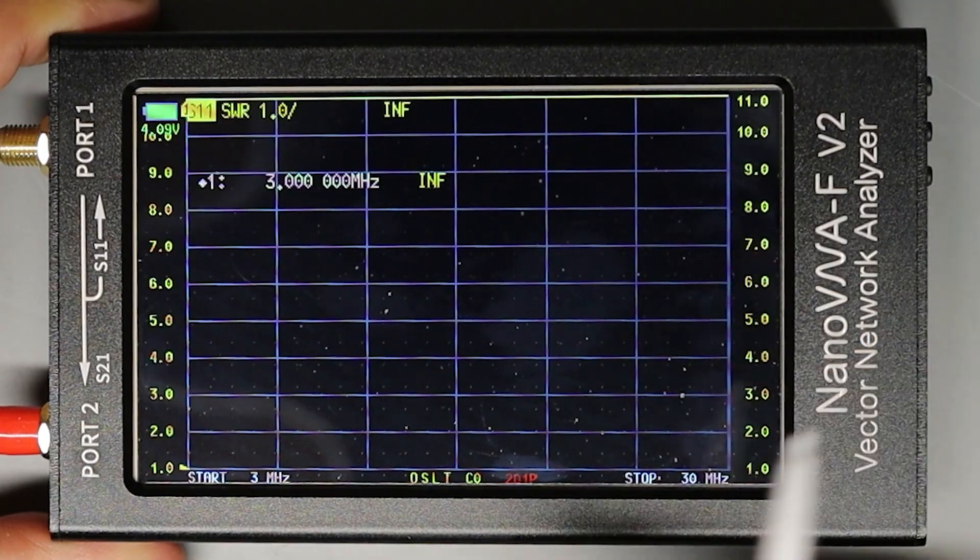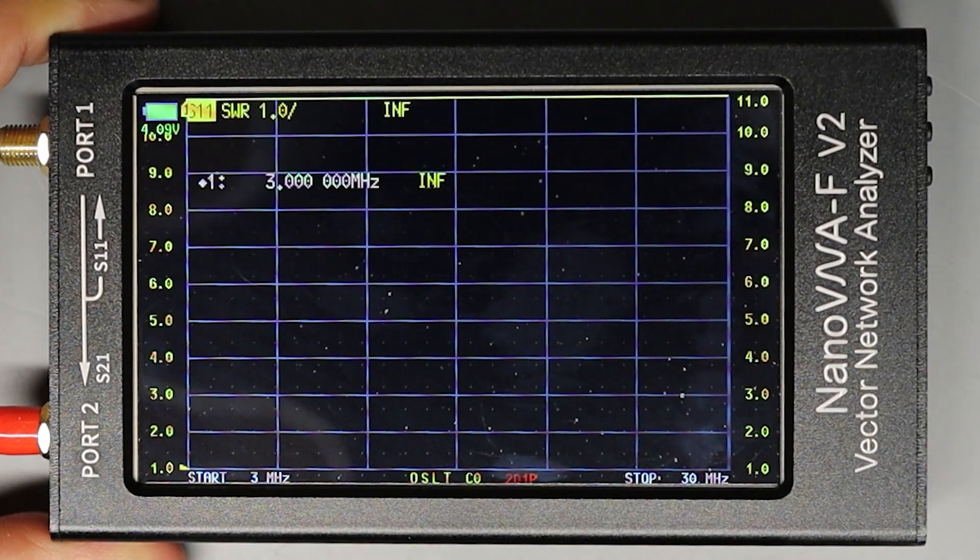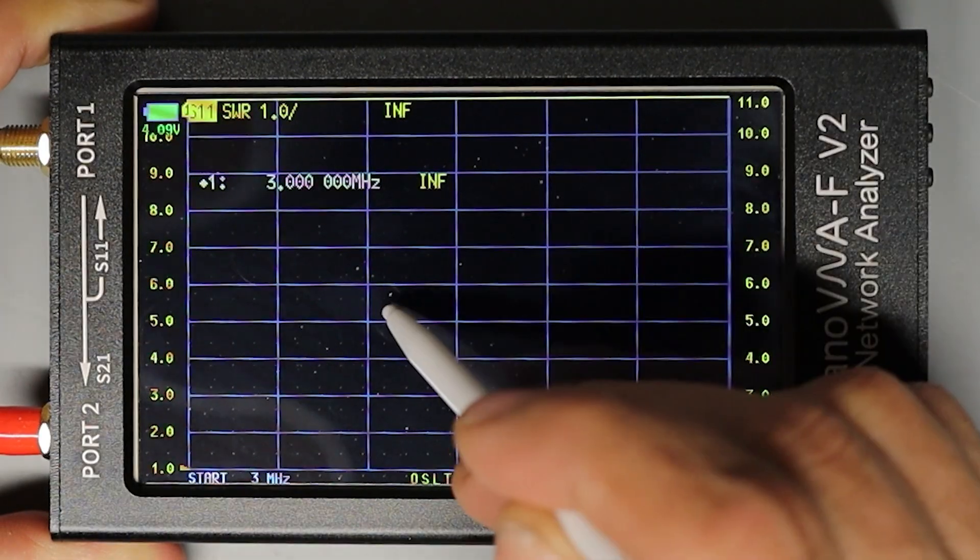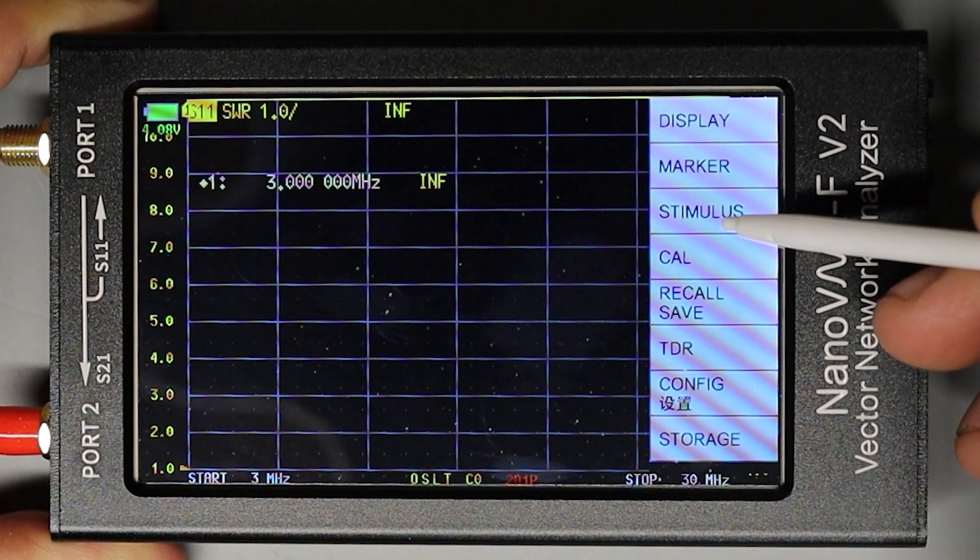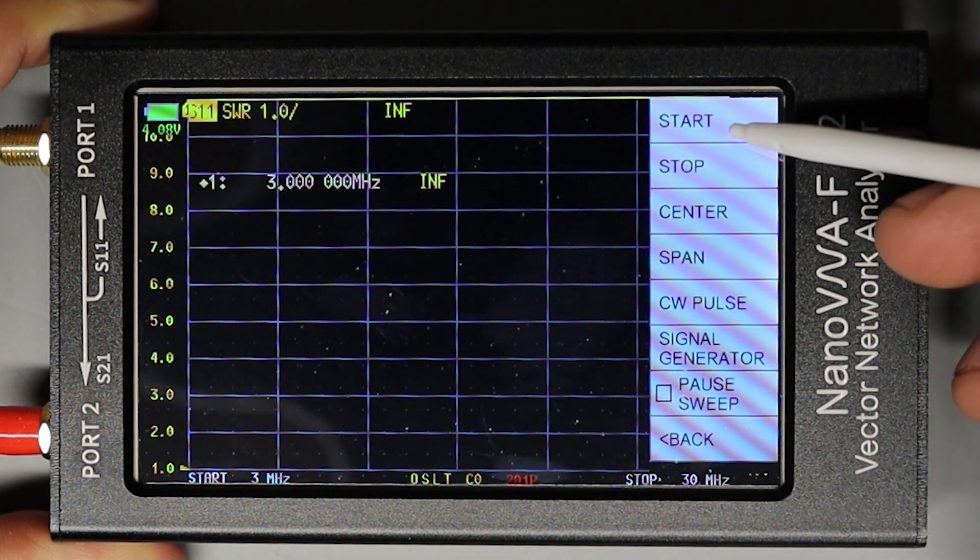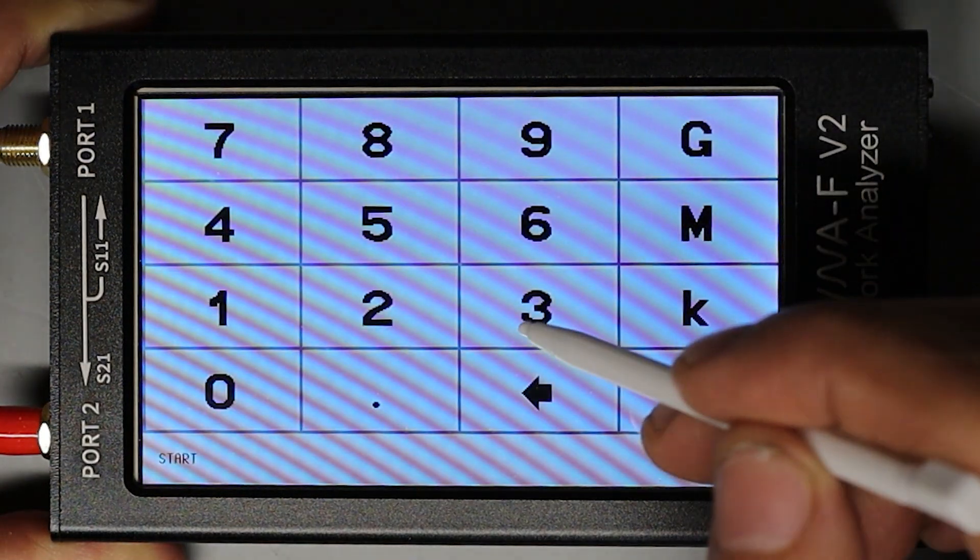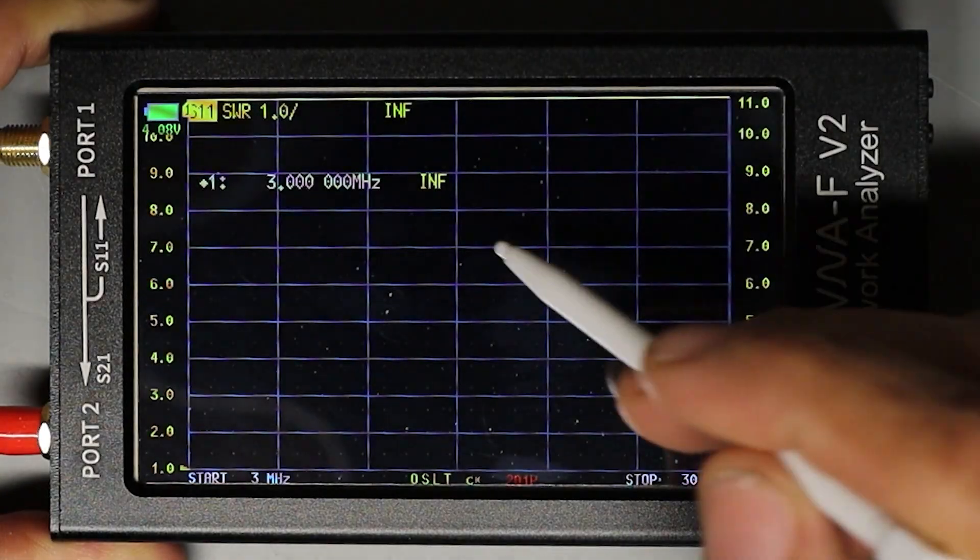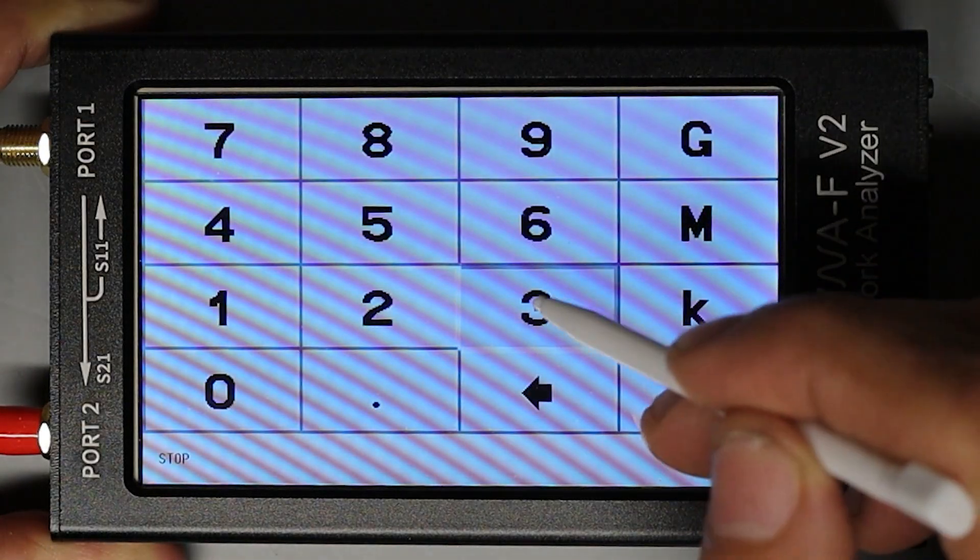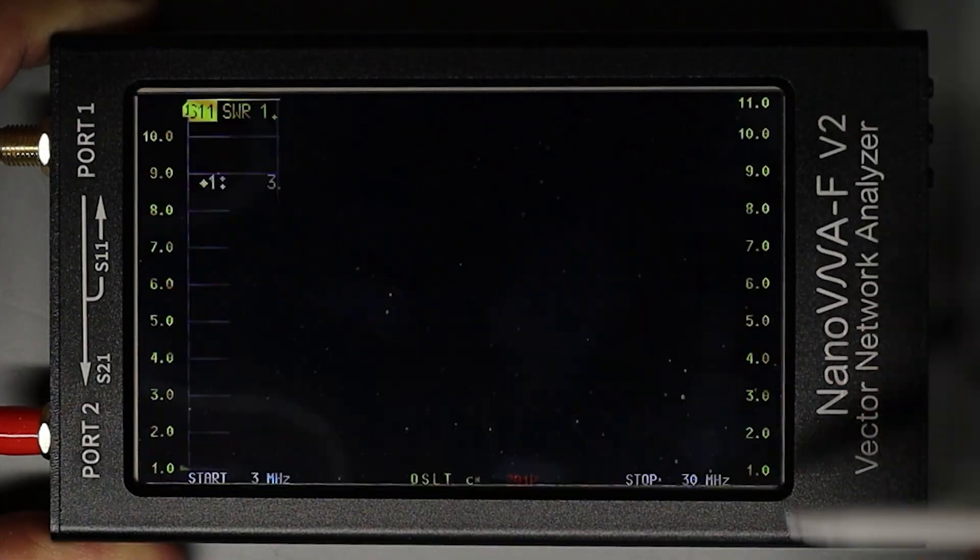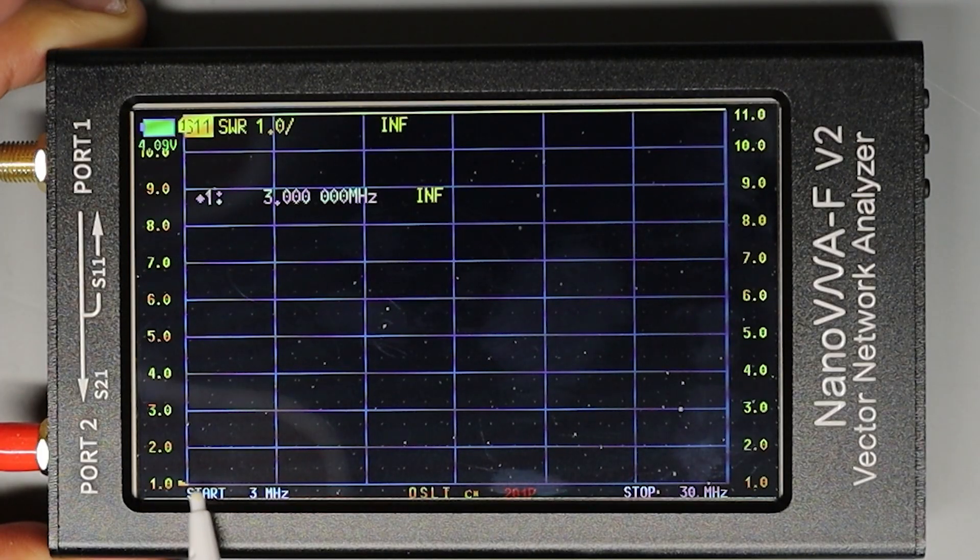Before I do anything else I'm going to set the frequency span that the NanoVNA is going to measure. I'm going to access the menu system by clicking over here in free space and then I'm going to go to stimulus. I'm going to set my start frequency to 3 megahertz and then I'm going to go back in and set my stop frequency to 30 megahertz. Now that that's set you can see the start frequency over here of 3 megahertz and the stop frequency of 30.